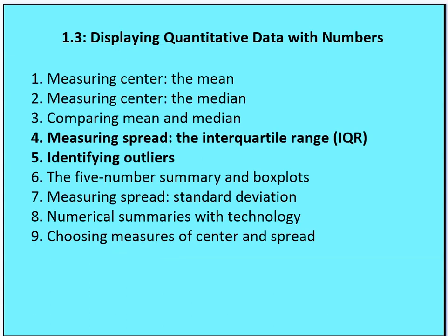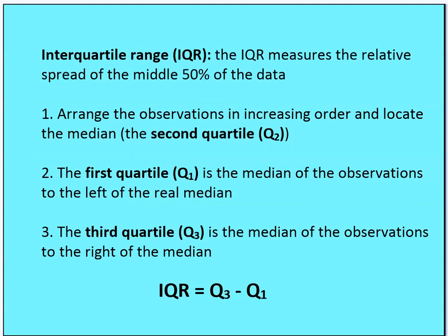Now we're going to talk about interquartile range and identifying outliers. This is really good information you'll need for the AP exam and also as a comparison to standard deviation. The IQR measures the relative spread of the middle 50% of the data.